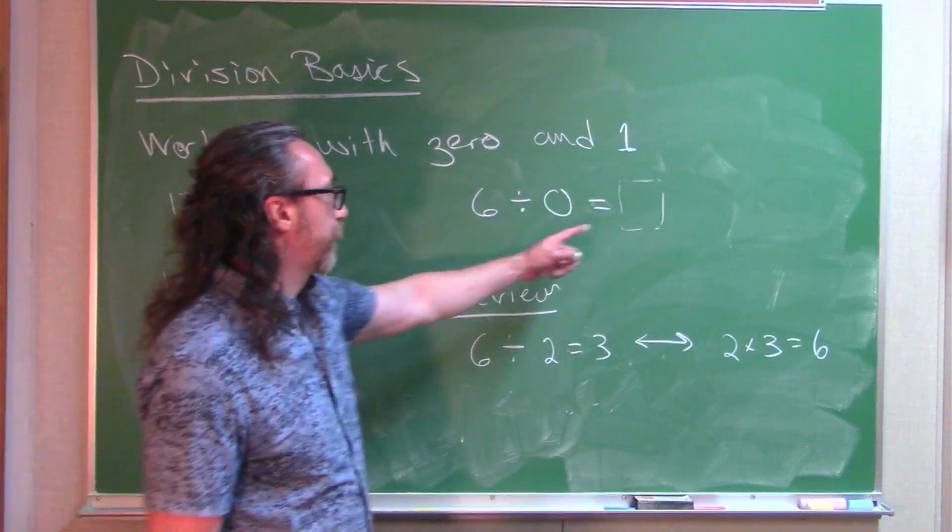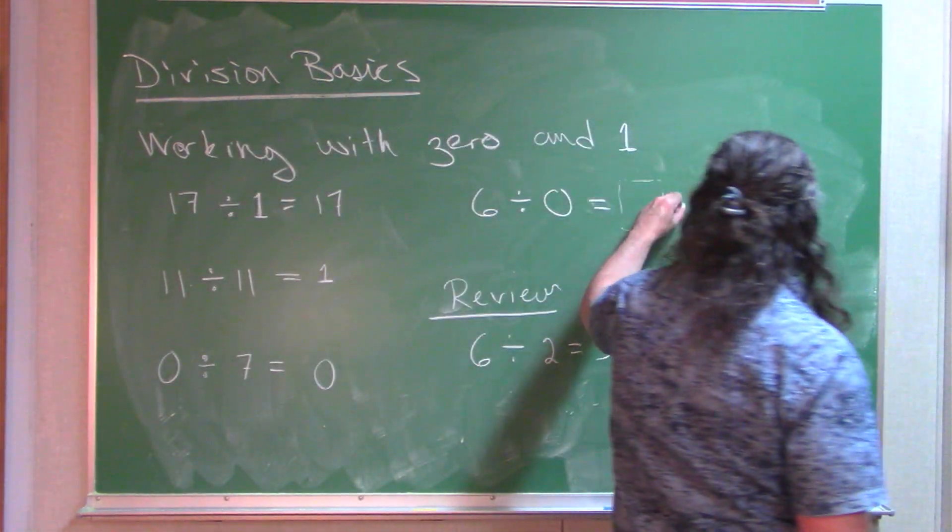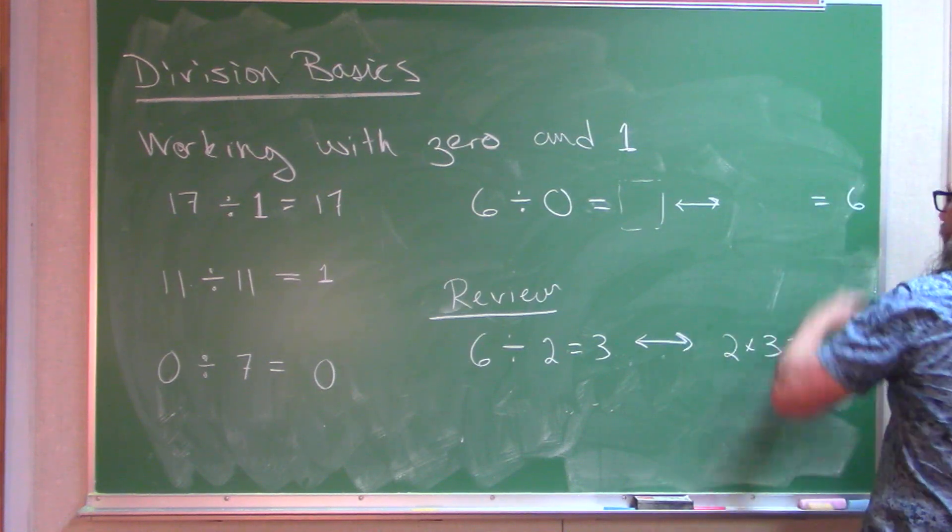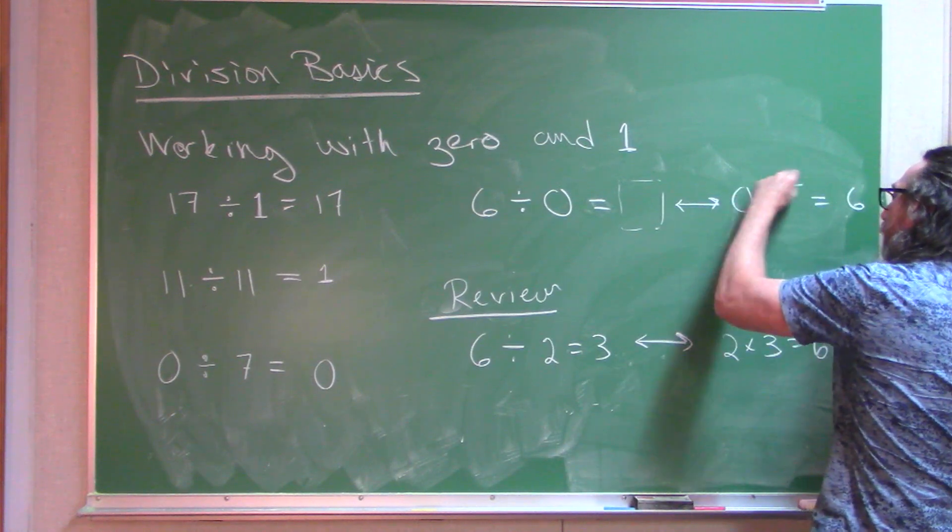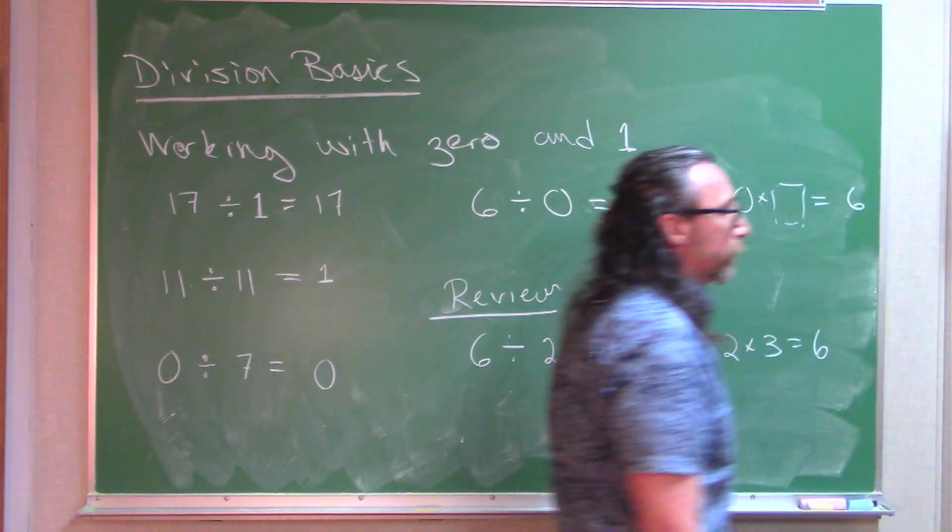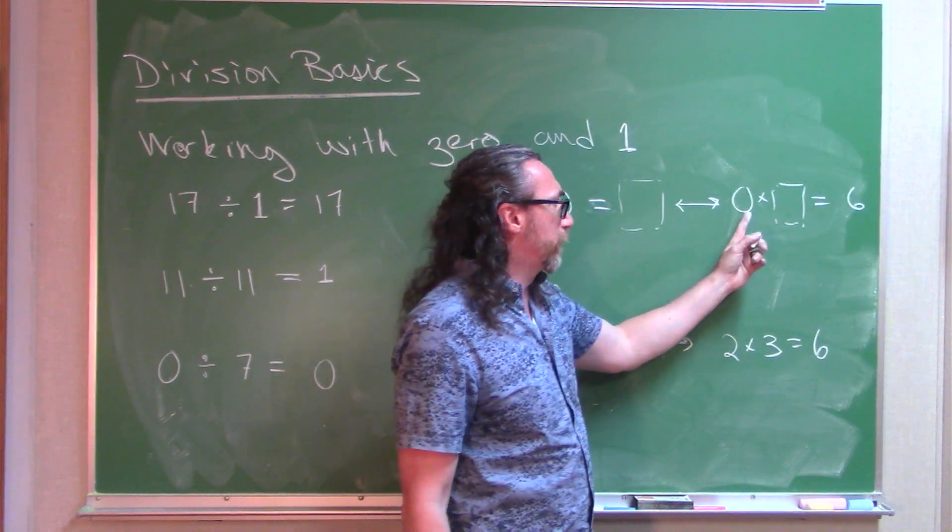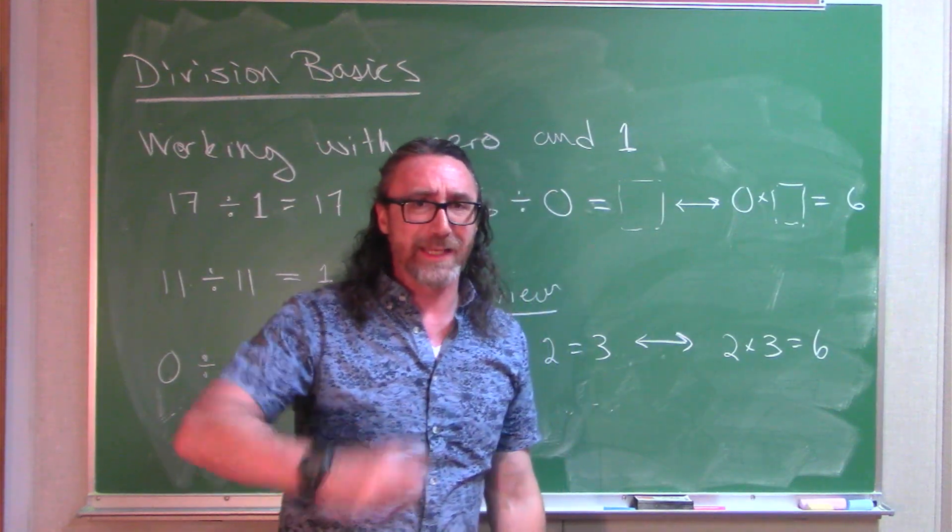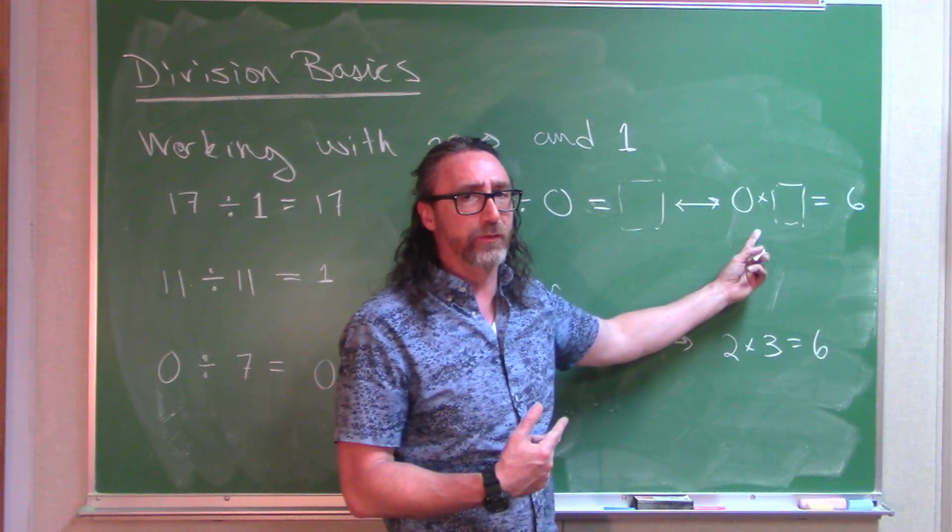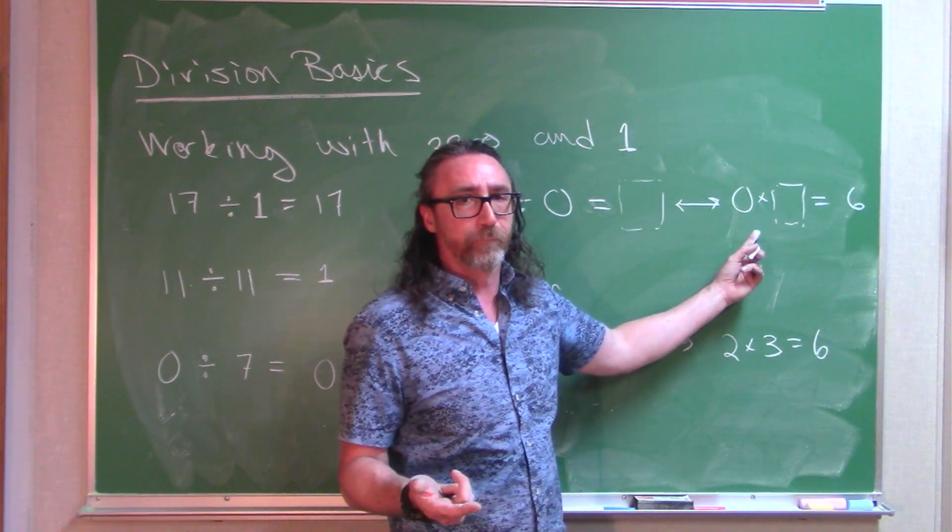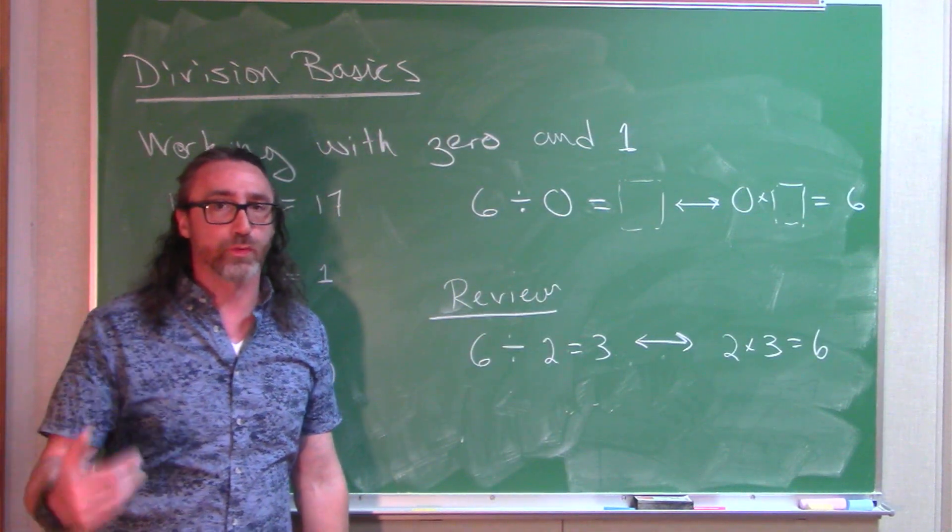So if I'm thinking about what I could fill in that box with to make a true statement, I'm really talking about this multiplication fact. I want to be able to get a 6. So 0 times blank equals 6. So I'm looking for what I can fill in this box to make a true statement here now. My only problem is that 0 times any number is 0. So no matter what number I fill in, on the left hand side I'm going to get 0. I am never going to get 6.